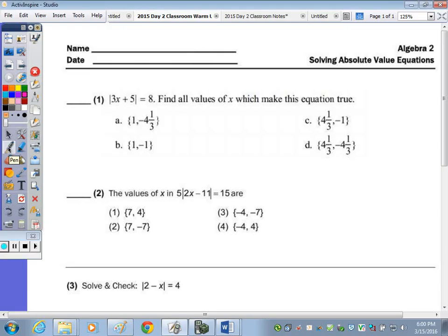In number one, the absolute value of 3x plus 5 is equivalent to 8. Find all values of x which make this equation true. The absolute value expression is isolated, so you can take the expression and set it equal to 8 and set it equal to negative 8, and then solve both equations for x.